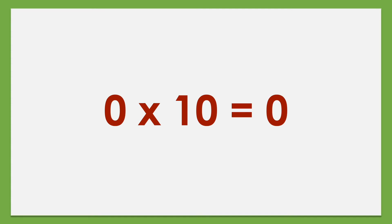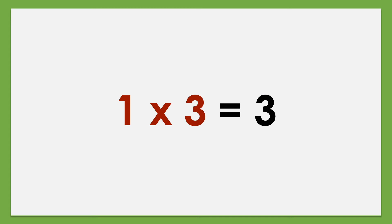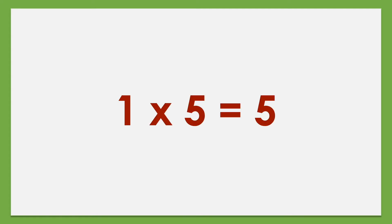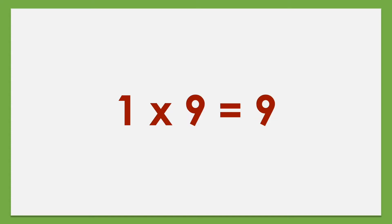0 times 11 equals 0, 0 times 12 equals 0. Set of 1: 1 times 1 equals 1, 1 times 2 equals 2, 1 times 3 equals 3, 1 times 4 equals 4, 1 times 5 equals 5, 1 times 6 equals 6, 1 times 7 equals 7, 1 times 8 equals 8, 1 times 9 equals 9.